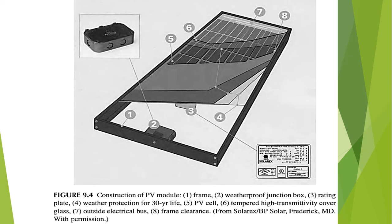First, I will discuss the solar photovoltaic cell. PV cells convert sunlight directly into DC electric energy. The performance of the solar panel is determined by the cell types and the characteristics of the silicon structure used in its construction, with two main types being monocrystalline and polycrystalline silicon.